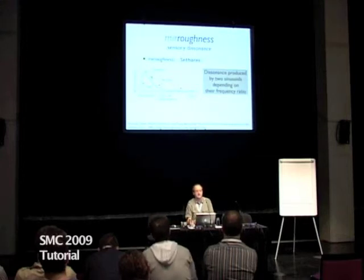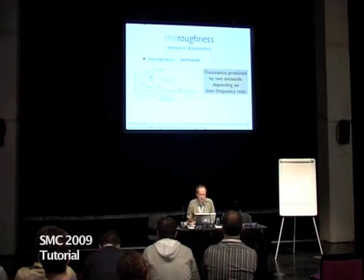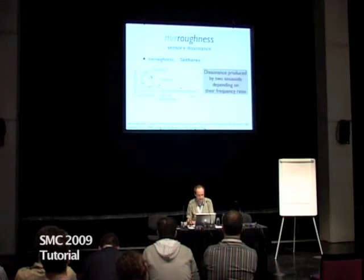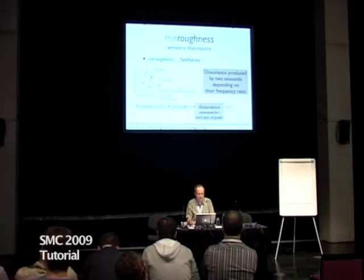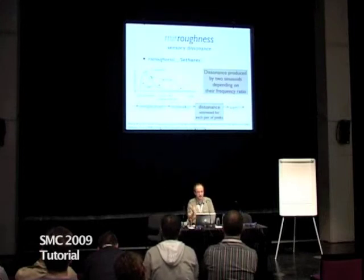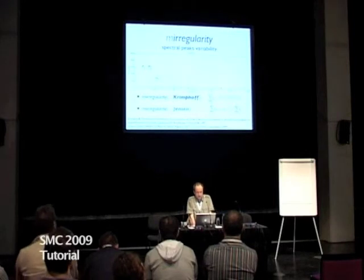Roughness is sensory dissonance. It means that especially when you have two sinusoids with very close frequencies, you have a perception of beatings that will create some roughness perception. Here is the curve proposed by Opsahl, showing for each possible interval between two sinusoidal peaks what the perception of roughness will be. So now, if you have a particular spectrogram, we can take all the peaks, sum all these pairs of sinusoids, and have an idea of the global dissonance.